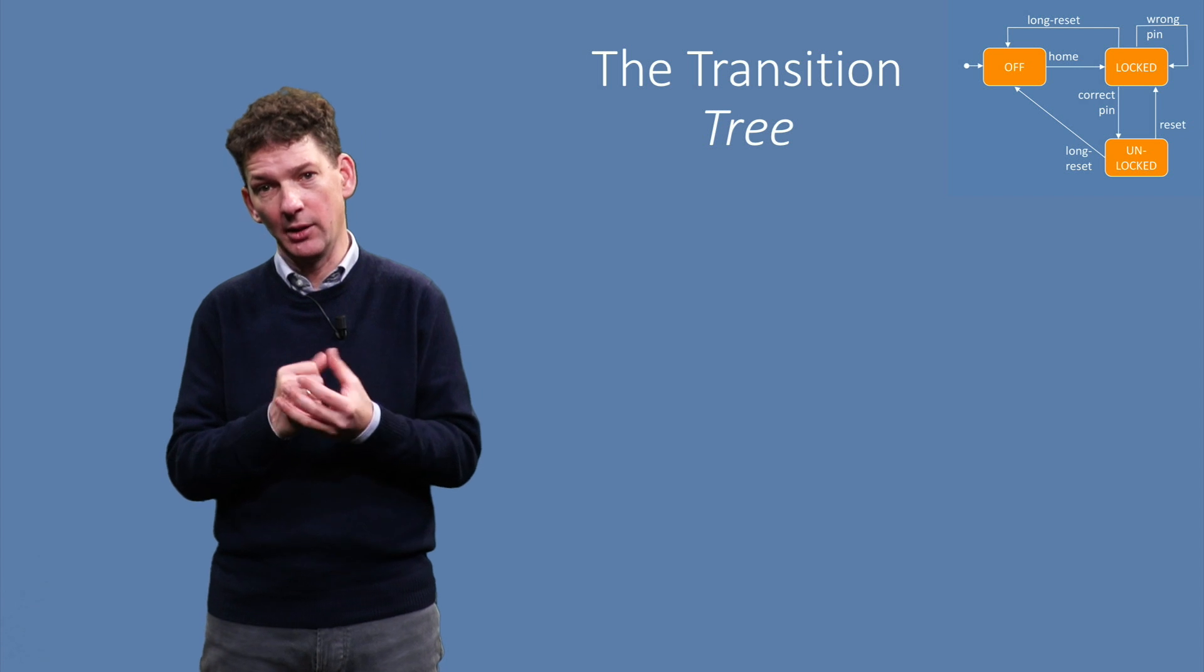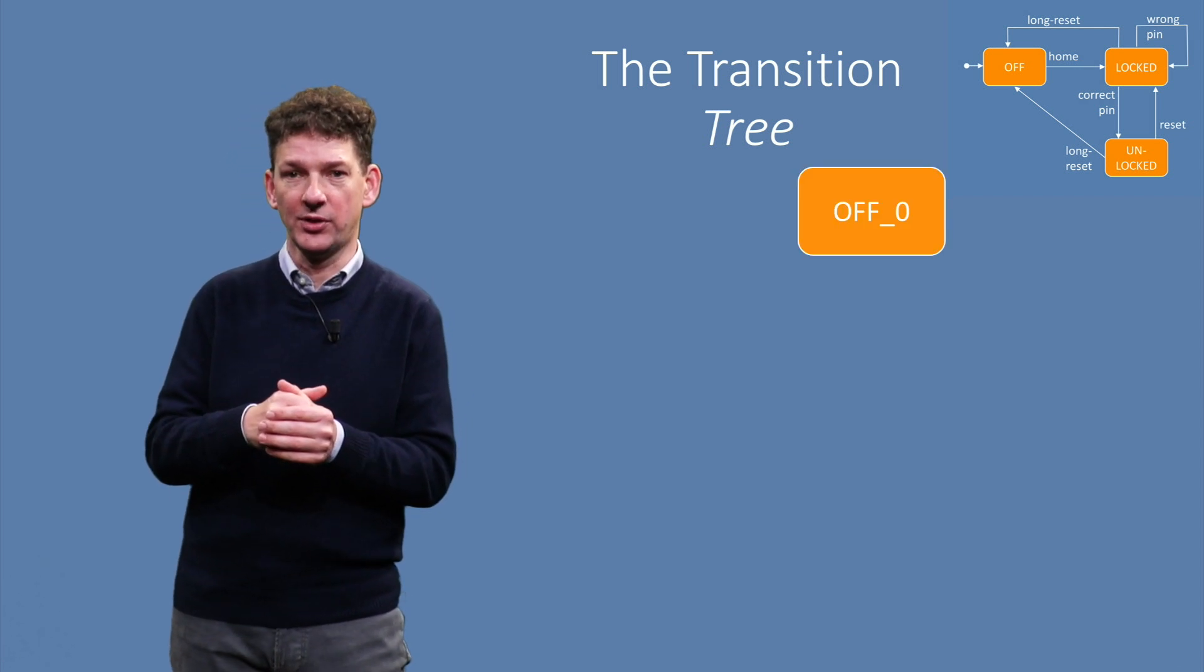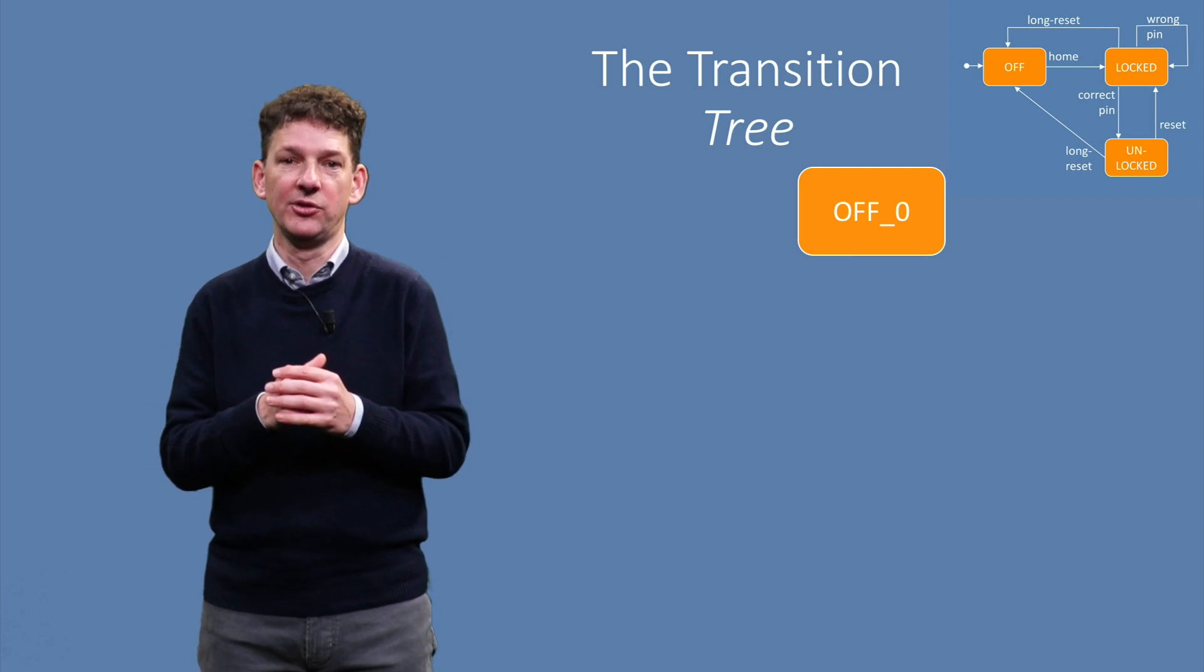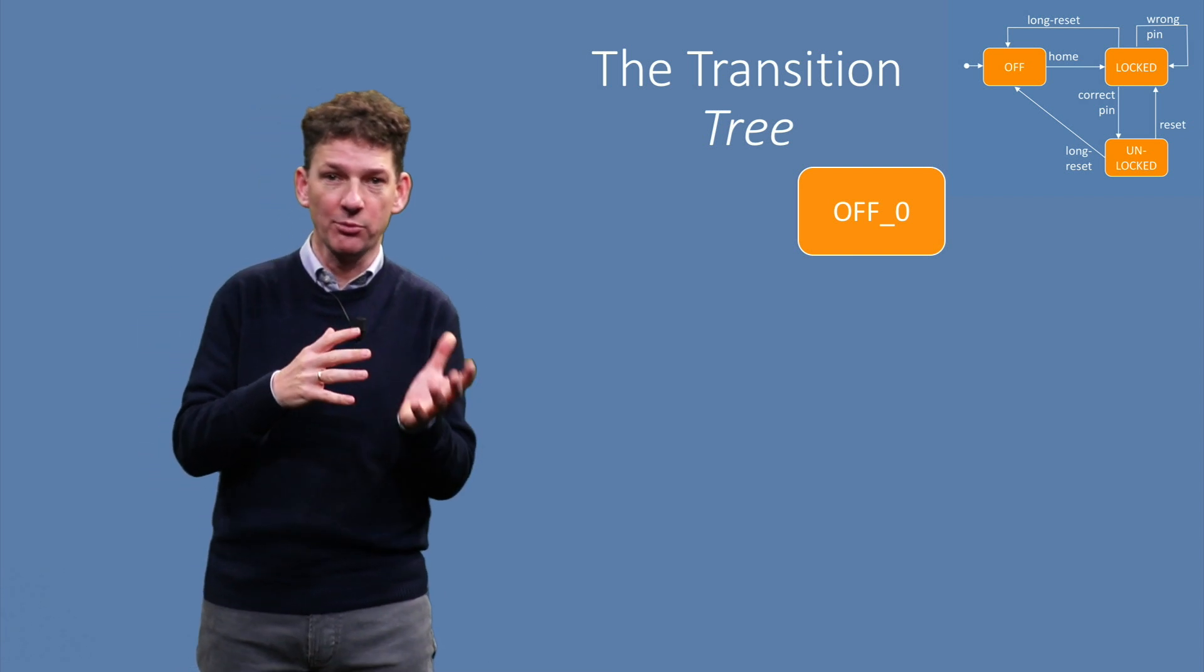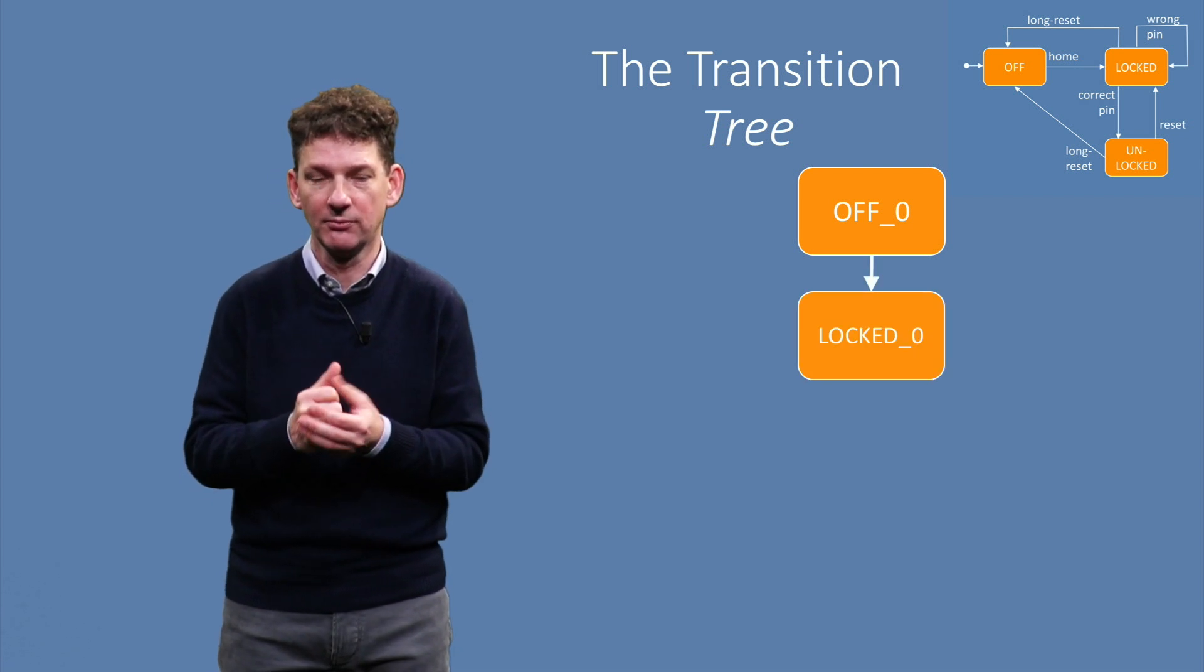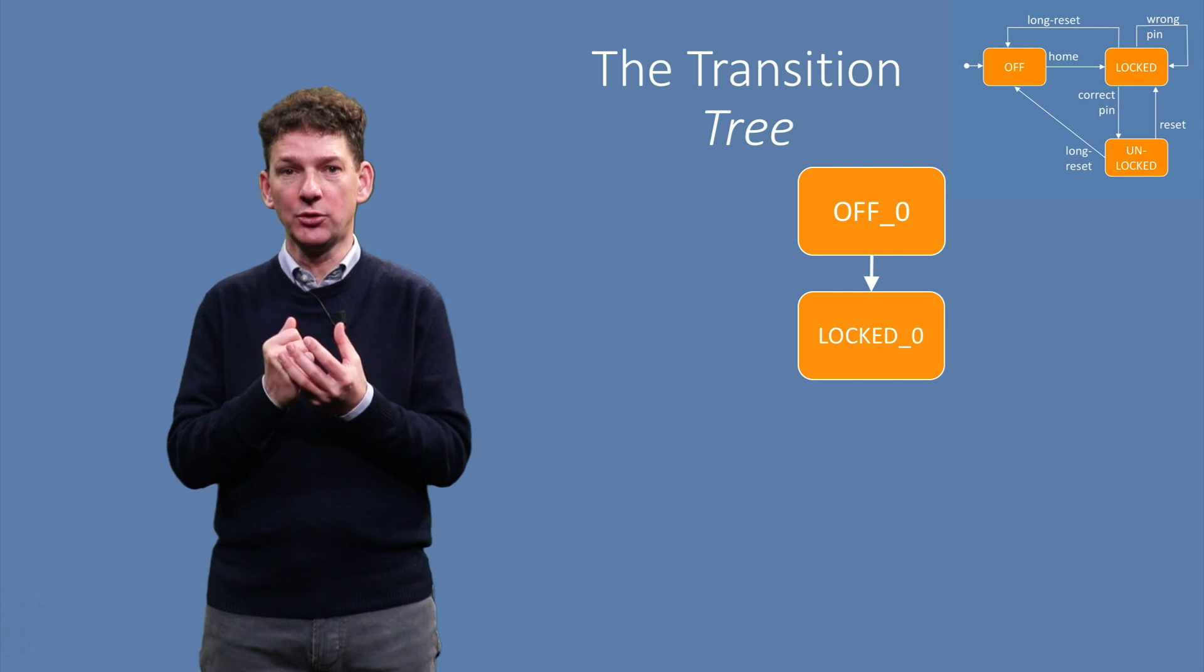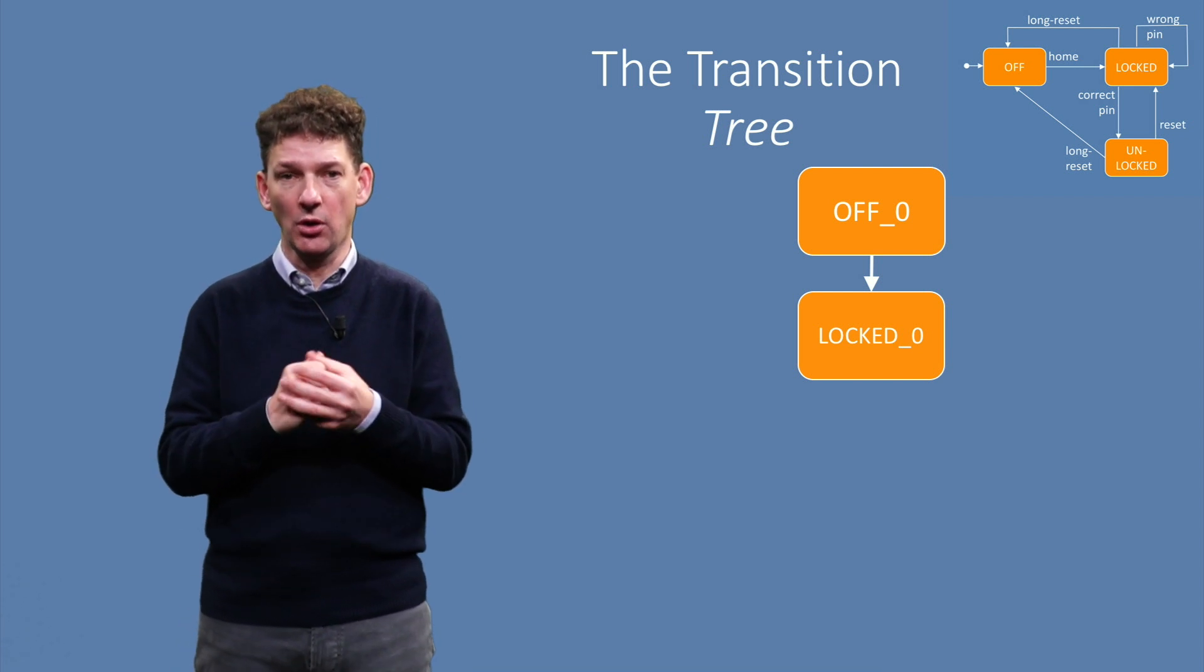Let us do this for the little diagram shown here. We start with the initial state, named OFF. Since our tree will duplicate some states, we add a number to the state to give it a unique name, in this case 0. From OFF we have one outgoing transition, we can go to the LOCKED state.